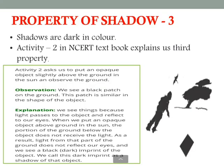Let's see in detail the third property: shadows are dark in color. This is given in NCERT textbook Activity 2. Activity 2 asks us to put an opaque object slightly above the ground in the sun. Observation: we see a black patch on the ground. When we put an opaque object above the ground in the sun, the portion of the ground below the object does not receive light, so we see a black imprint of the object. We call this dark imprint the shadow of that object.